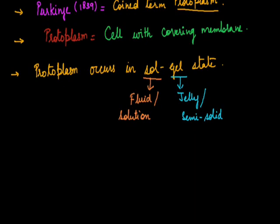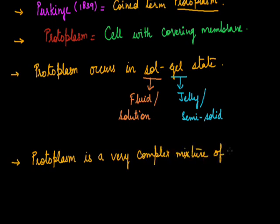Now if we talk about its chemical composition, the protoplasm is a mixture of mixtures or super mixtures, and it consists of various chemicals like water which is present in the maximum amount, ions, salts, minerals, and other organic compounds.